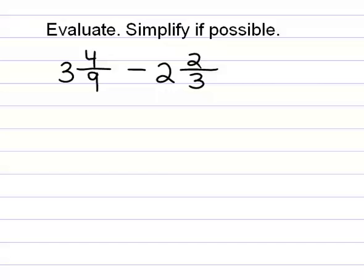First thing I'm going to do is turn these fractions into improper fractions. 9 times 3 is 27 plus 4 is 31, so 31 ninths. 3 times 2 is 6 plus 2 is 8, so that's 8 thirds.